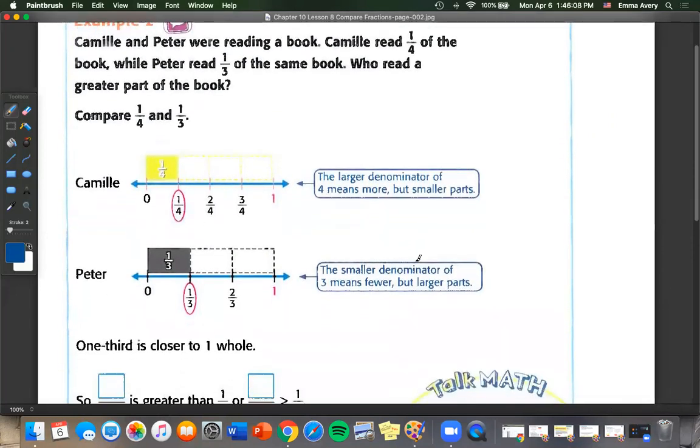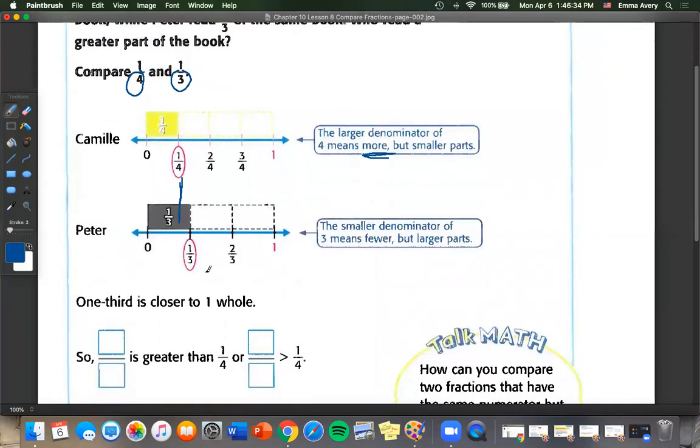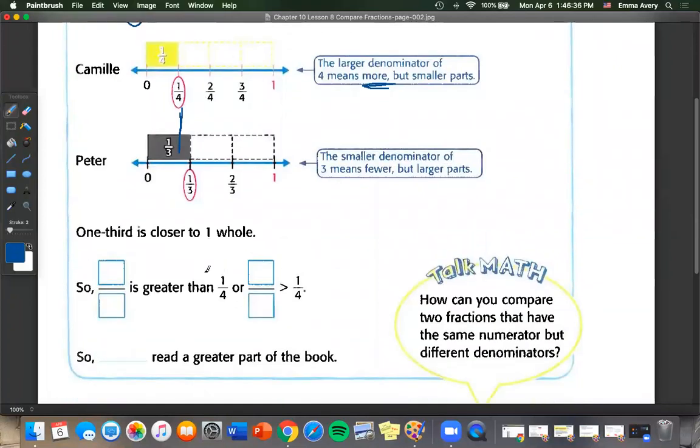Because these have different denominators, four and three, we're on two separate number lines. But we can see that the larger denominator of four means more but smaller parts, so one fourth is actually smaller than one third. The smaller denominator of three means fewer but larger parts. So because one third is closer to one whole, one third is greater than one fourth.